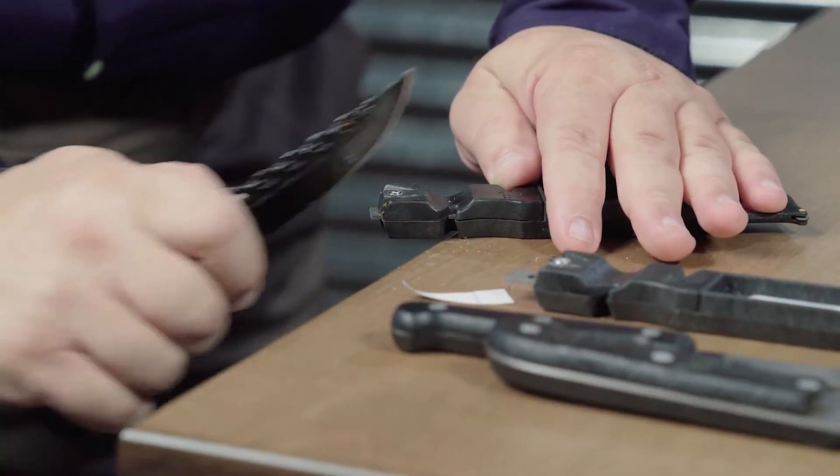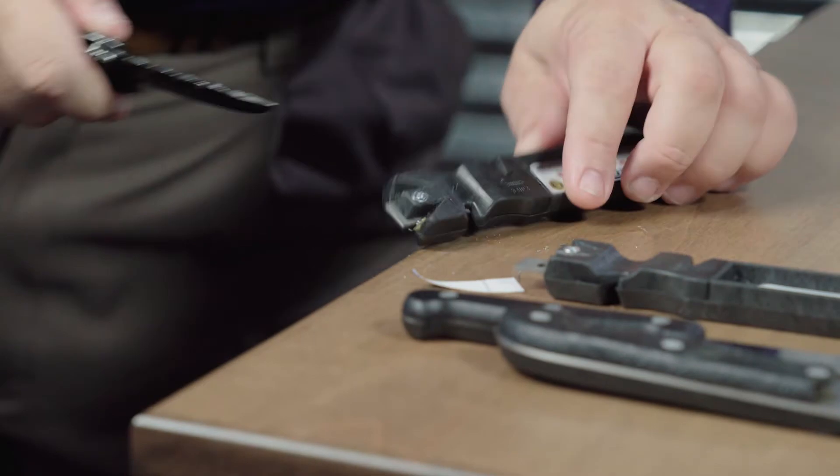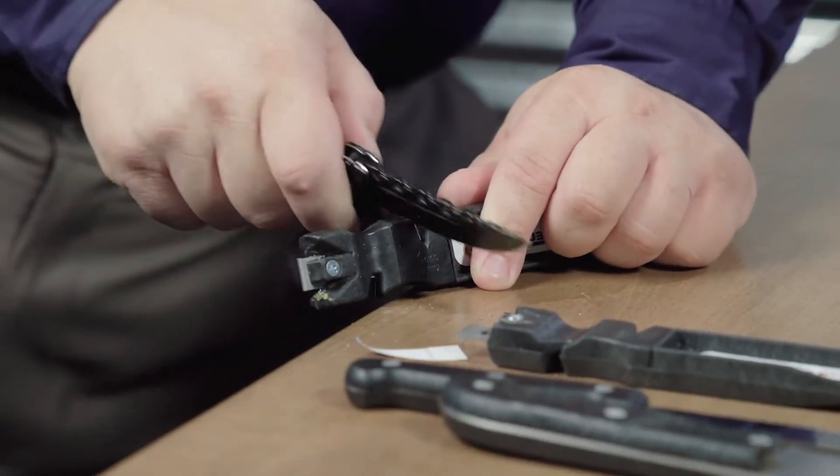You do side one, you do side two until you feel that both sides are nice and clean. Then swipe. True the edge left, right.